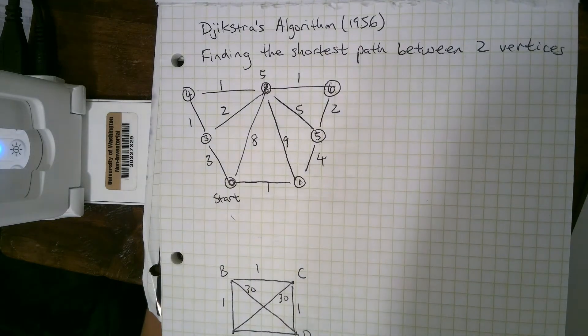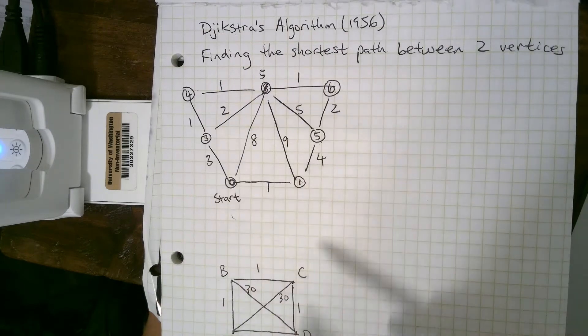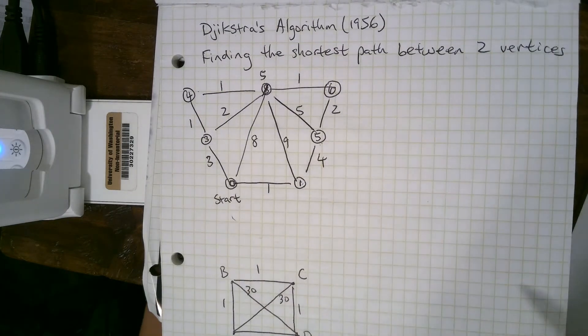So now we're done. We have the shortest path from here to every other vertex in the graph. At least we have the length recorded. We could go back and see what the actual path is.